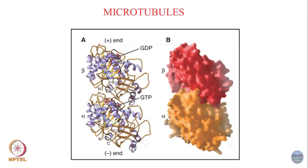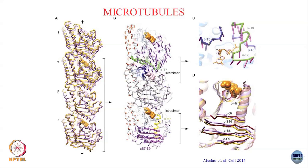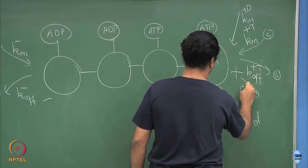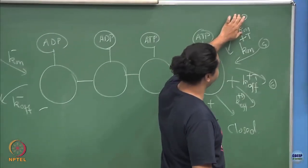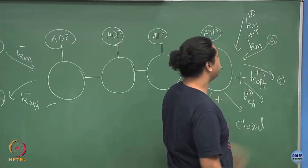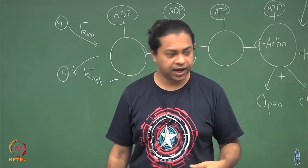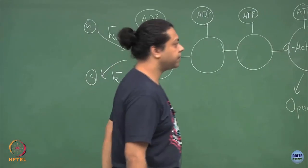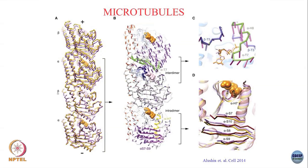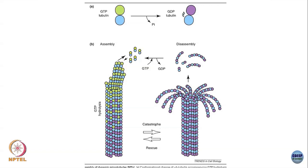In a given heterodimer, it is the GTP on the beta subunit that hydrolyzes to give GDP. In principle, you could say there is a k-on rate for ATP-bound subunits, a k-on for GDP-bound G-actin, and similarly two dissociation rates. But this GDP-bound rate is experimentally much smaller, so for most modeling purposes we do not take it into account. We say only the GTP form attaches and only the GDP form detaches, but in principle all four rates should be considered.